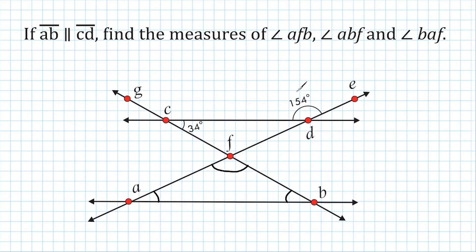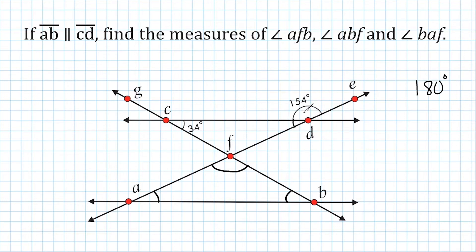I'm going to start with the given angle of 154 degrees and find the adjacent small acute angle. I can visually see that this small angle and the 154-degree angle can be pieced together to form half of a circle. We know that half of a circle is equal to 180 degrees, so this small angle is a supplement to the 154-degree angle. Supplementary angles have a sum of 180 degrees, so I take 180 minus 154, which gives us 26 degrees.